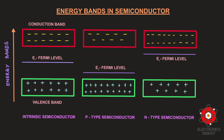The valence band is present below the Fermi level and the conduction band is present above the Fermi energy level in the energy band diagram. The Fermi level is the highest energy state occupied by any electron at absolute zero temperature. When external excitation is provided, electrons in the valence band move into the conduction band. These two bands are separated by the forbidden energy band gap.